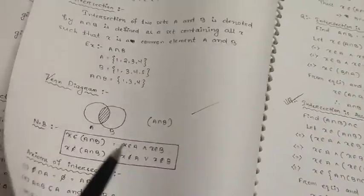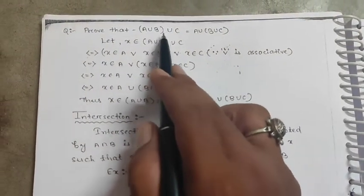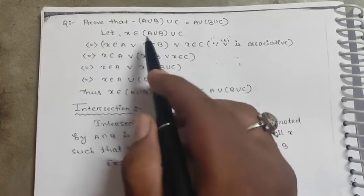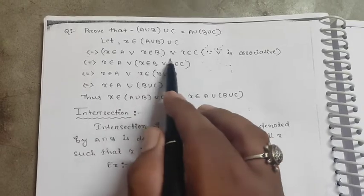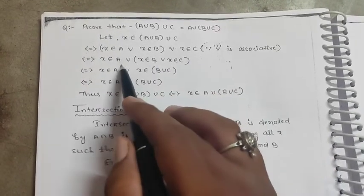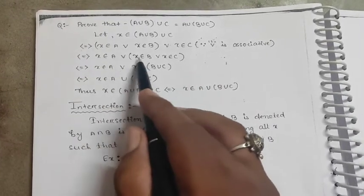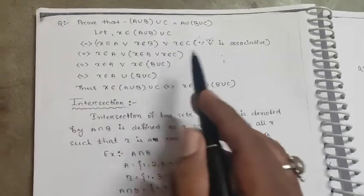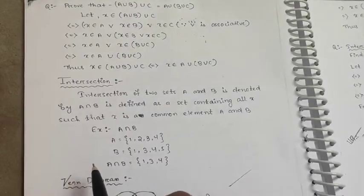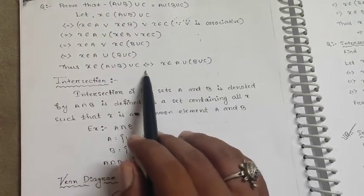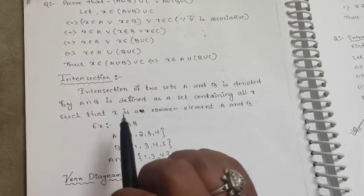Prove that union is associative: (A union B) union C equals A union (B union C). Let x belong to (A union B) union C. Then x belongs to A or B or C, which means x belongs to A union (B union C). Thus the associative property is satisfied.